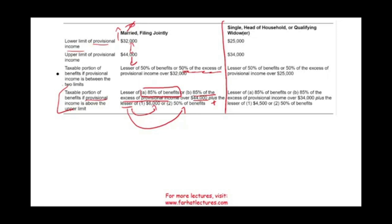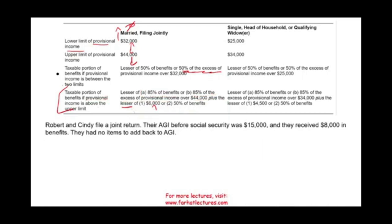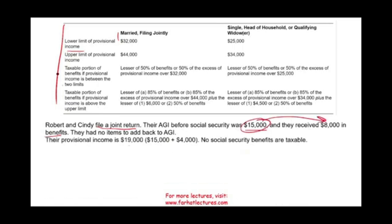The best way to illustrate these concepts is to actually work an example. Robert and Cindy file a joint return. Their AGI before social security is $15,000 and they received $8,000 of social security benefit. They had no items to add back. So we compute their provisional income by taking their AGI plus 50% of their social security, which gives a provisional income of $19,000. Since $19,000 is below $32,000, no social security benefit is taxable.